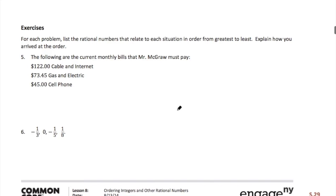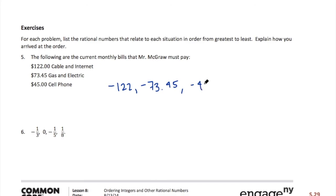In this exercise, for each problem, list the rational numbers that relate to the situation in order from greatest to least, and explain how you arrived at the order. The following are the current monthly bills that Mr. McGraw must pay: $122 for cable and internet, $73.45 for gas and electric, and $45 for his cell phone. These are all bills, so they're all negative. Negative $122 is the most negative, then negative $73.45, and then negative $45 is the least negative.